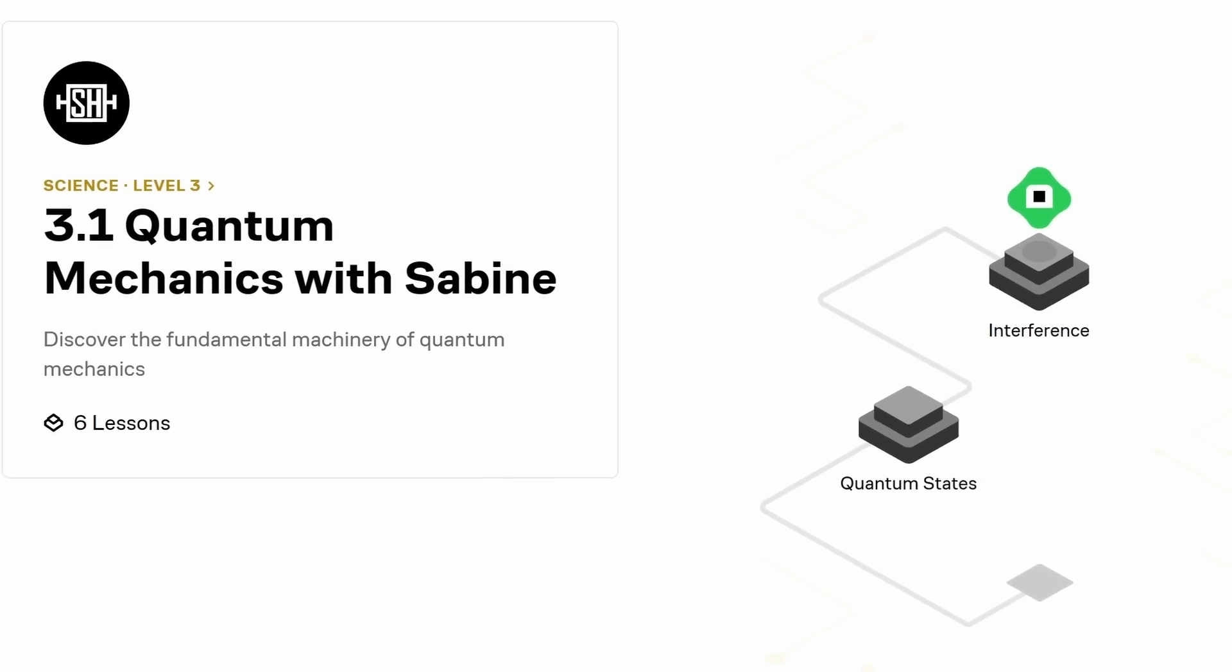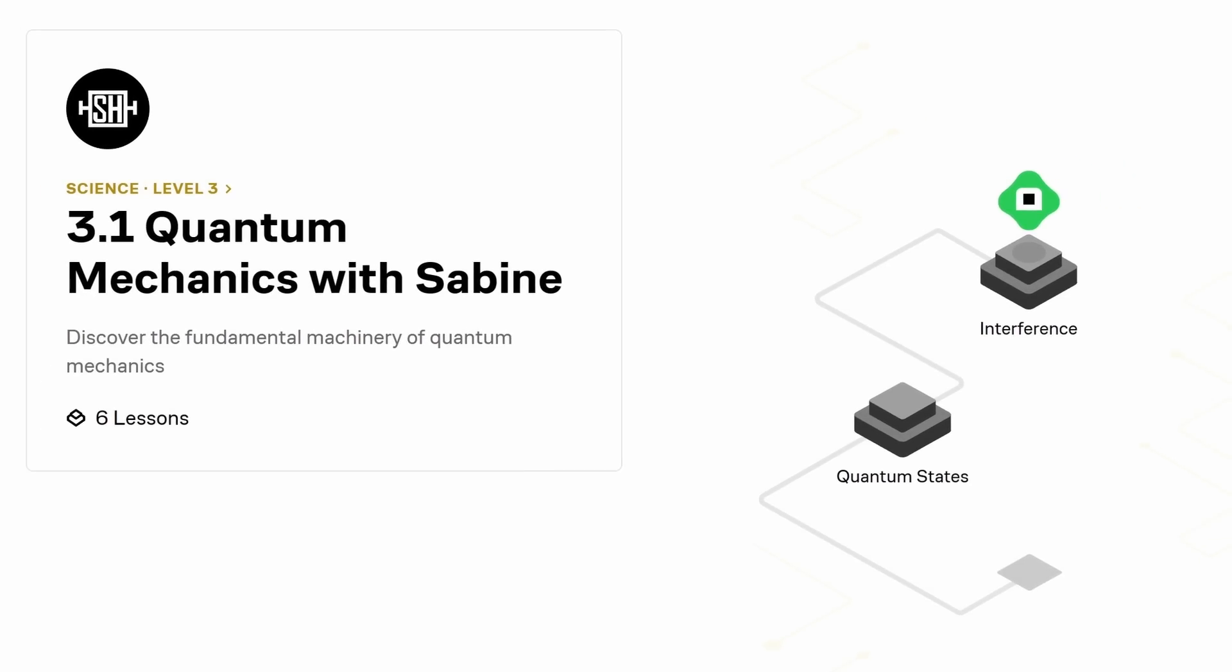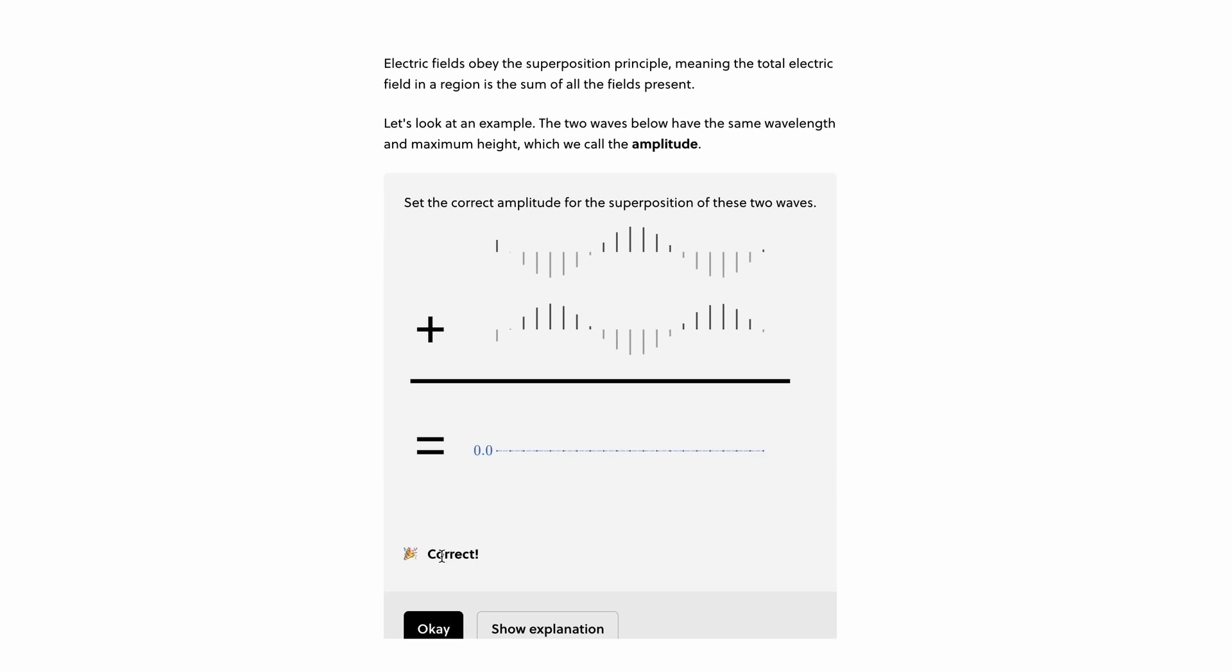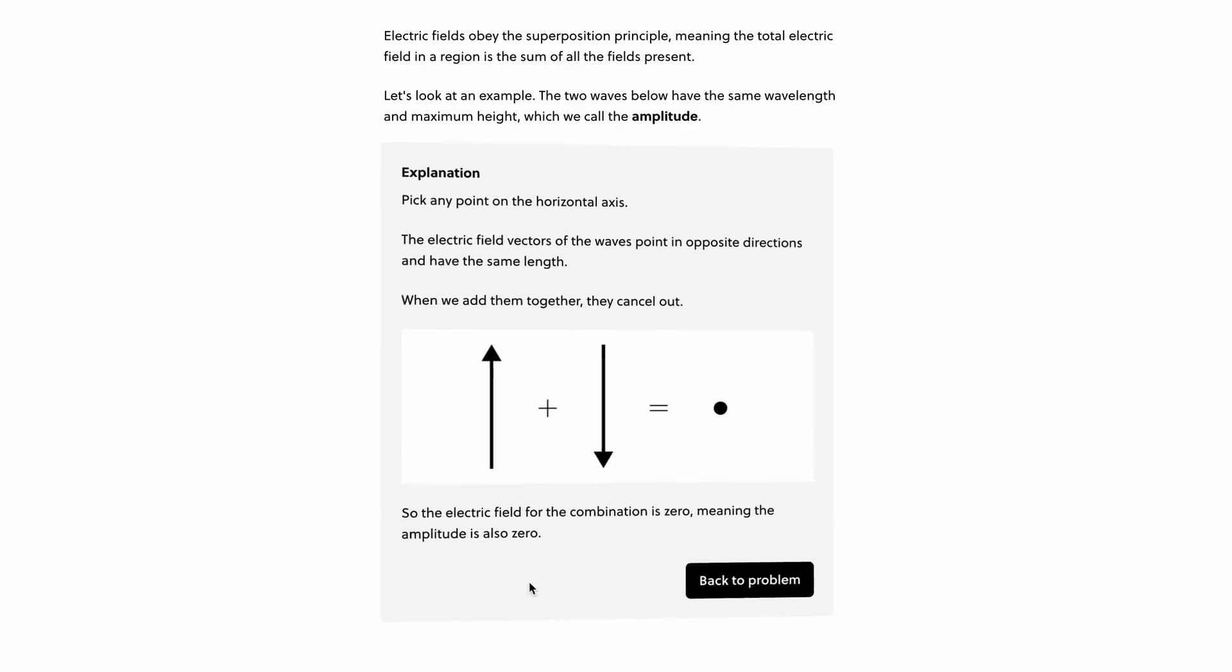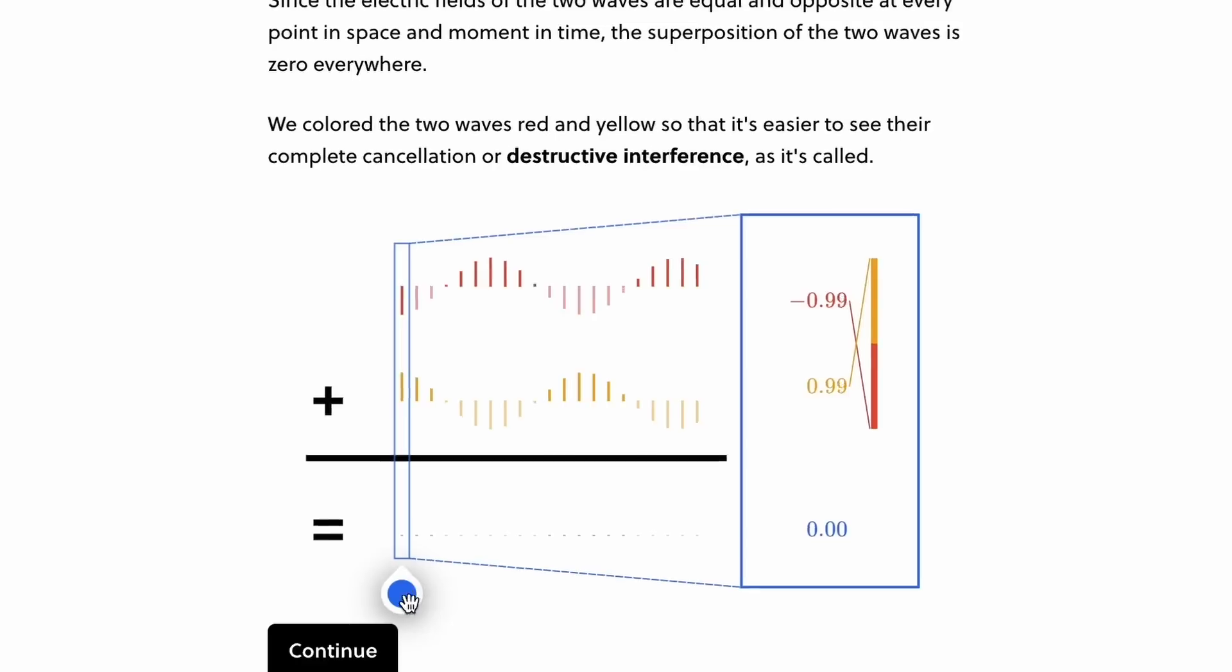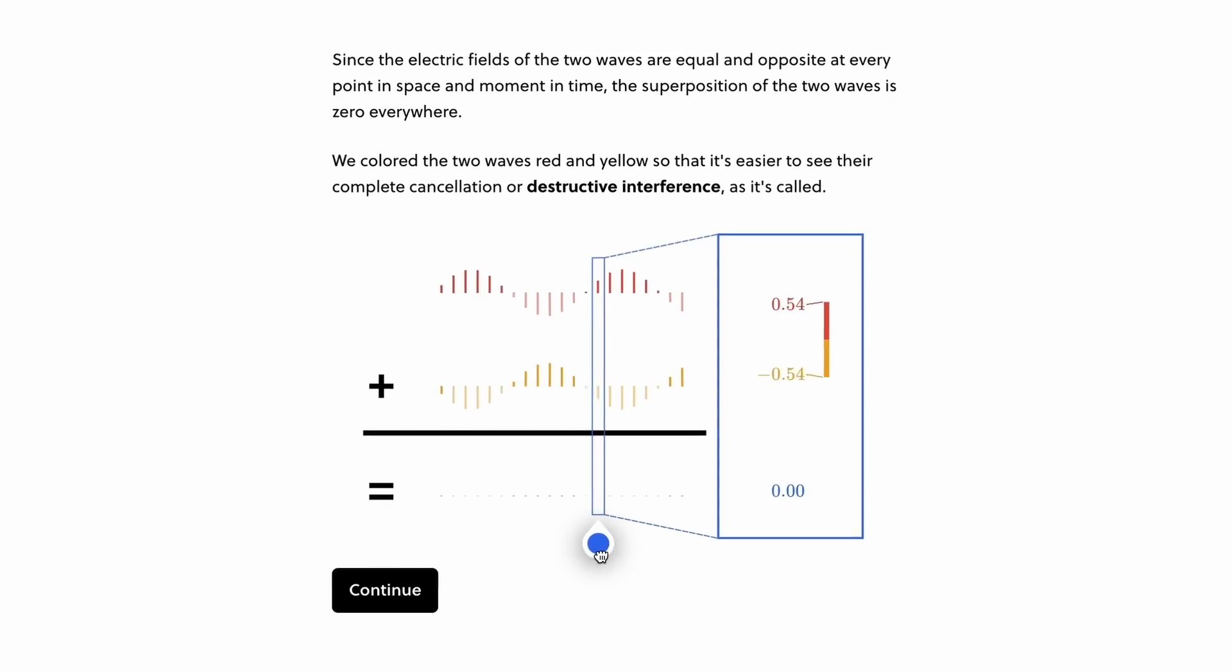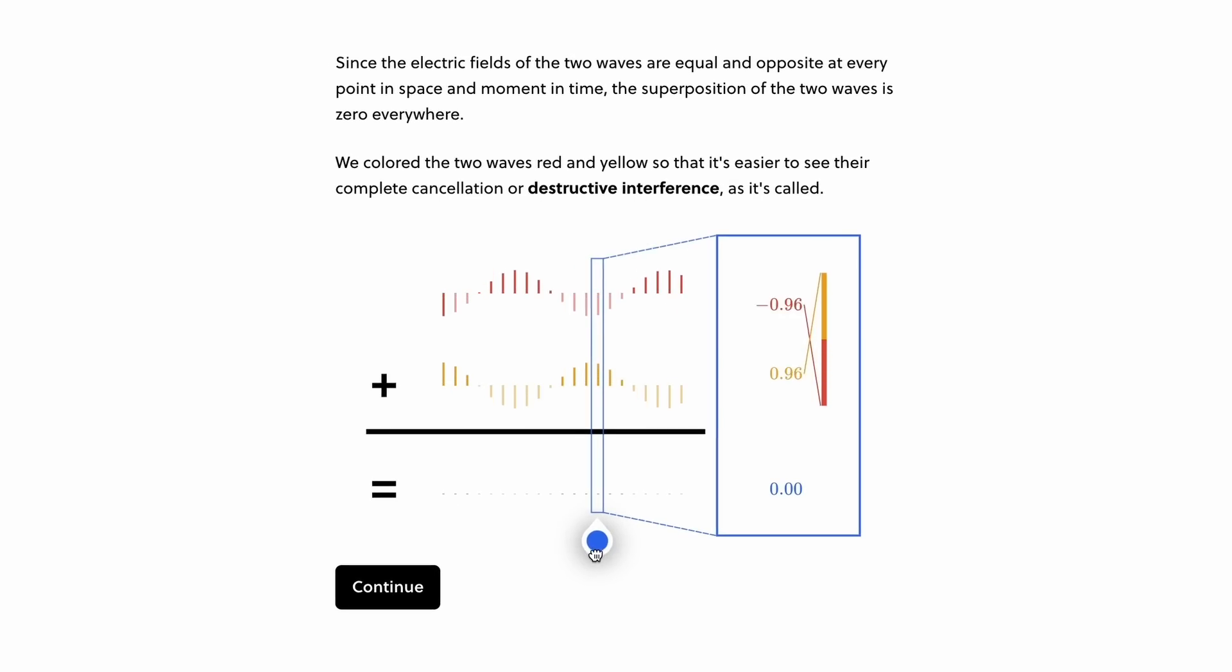I even have my own course on Brilliant. That's an introduction to quantum mechanics. It'll help you understand what a wave function is and what the difference is between superpositions and entanglement. It also covers interference, the uncertainty principle and Bell's theorem. And after that, you can continue maybe with their course on quantum computing or differential equations.